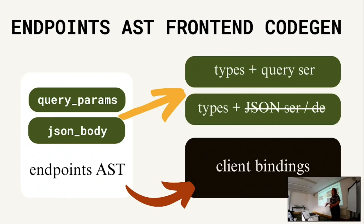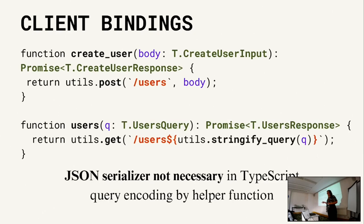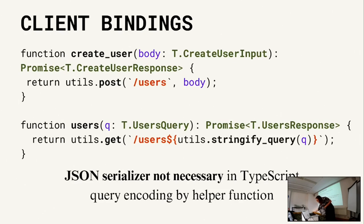For routes, we generate types and routes in the format your web framework needs. You create a function 'create user' by code generation - it reads the body, deserializes the input body using the generated type and its serializer, and there's a type annotation which guarantees we will match the expected output format specified in the DSL. Most web frameworks also require registering the route with the router. For the frontend, we do a similar thing - we generate the types, and from the endpoints we generate client bindings wrapping the HTTP calls. You have a function 'create user' that takes a body of the input body type and returns a promise with the response type. This is a thin wrapper around some library for making HTTP calls.